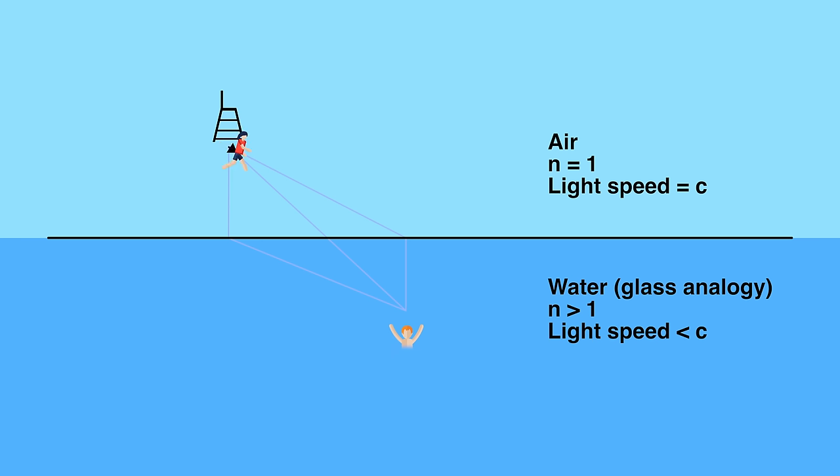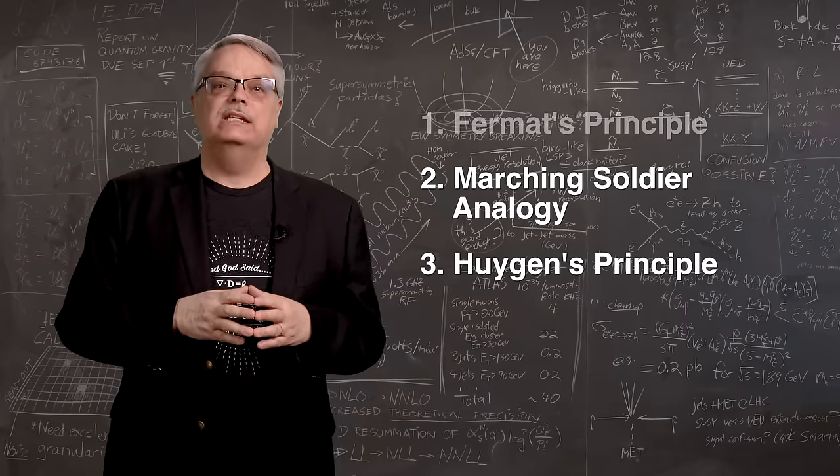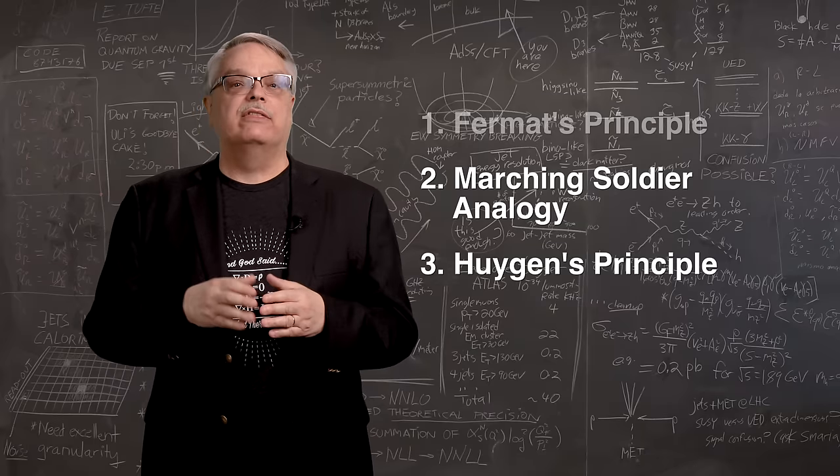It turns out that the shortest total time, that is to say when you add both running and swimming time, is exactly what you'd get from Snell's law for light. You run a little longer than you would for the straightest path, but that means that you swim a little less and the total time is shortest. And that's exactly what light does. It follows the path of shortest time.